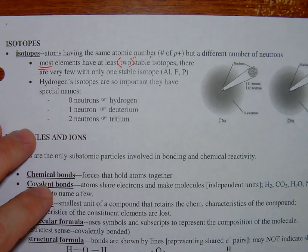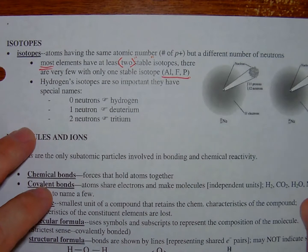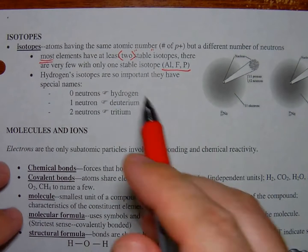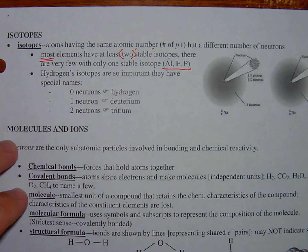There are very few that only have one stable isotope, and here are some examples: aluminum, fluorine, and phosphorus. That's not really going to be a test question, but just to show you that there are very few that have only one stable isotope.